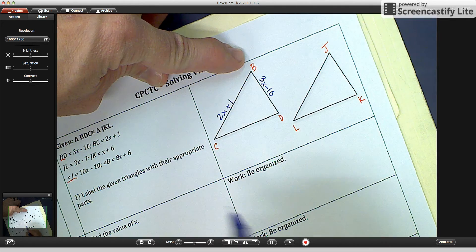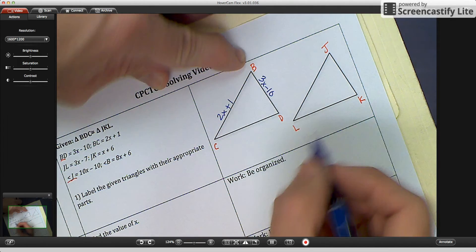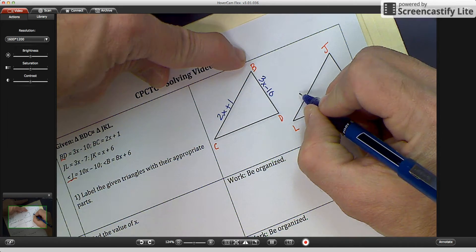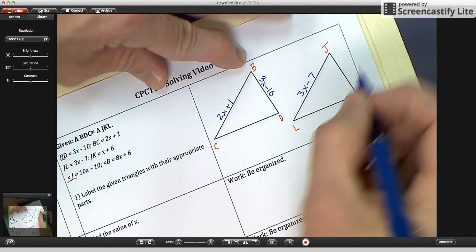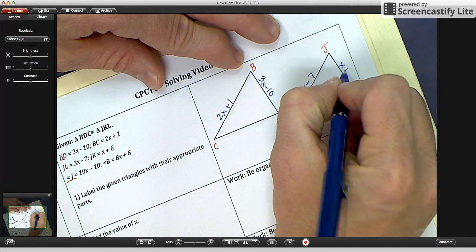We also have JL, which is 3X minus 7. So JL, 3X minus 7. And JK, X plus 6.